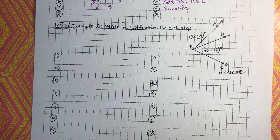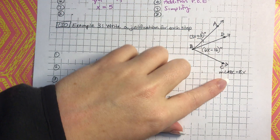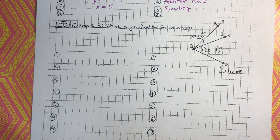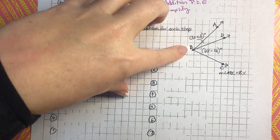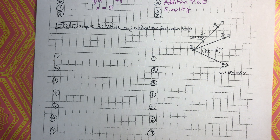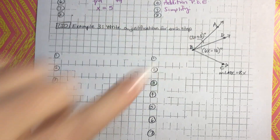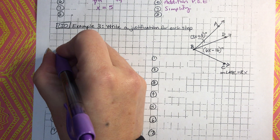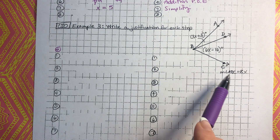We have a new picture. We're going to determine what x is. We have a piece here, a piece here, and the measure of angle ABC — which is the whole — equals 8x. Using our previous knowledge, when you have a piece of an angle, a piece of an angle, and the whole angle, this would be the angle addition postulate. We'll use that to create our equation to figure out what x is. But first, we write down our given information.